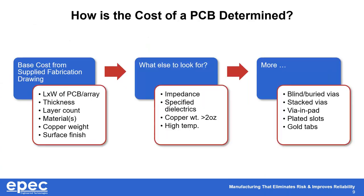A quick recap of what we've covered: base costs require a fabrication drawing with the length and width of the PCB or array, overall thickness, copper layer count, materials, copper weights, and surface finish — these are must-haves to calculate a base price. Other items we look for upfront include impedance, specified dielectrics, copper weights greater than two ounces, and high-temperature materials.